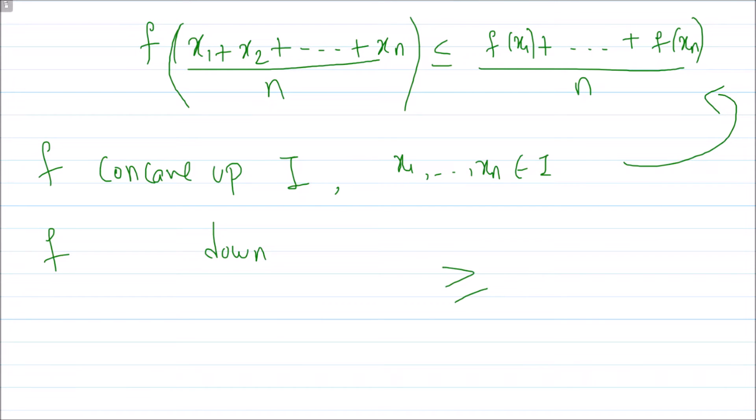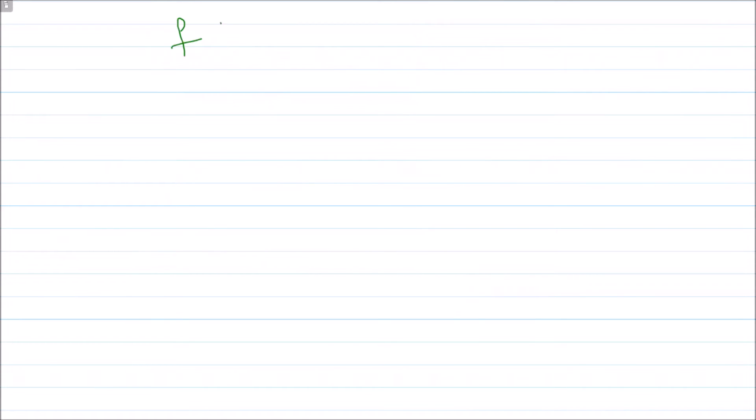By looking at the inequality, we chose the function to be square root of x squared plus one. Now we need to check whether this is concave up or concave down, then only we can apply Jensen's inequality. If the double derivative is positive then concave up, if negative then concave down. If you take the derivative, by chain rule the derivative of the function is x over square root of x squared plus one.